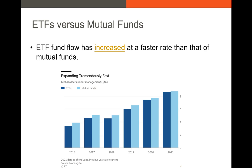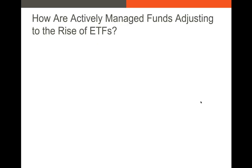Comparing fund flow or AUM of ETFs versus mutual funds year over year, ETFs are rapidly increasing their AUM and getting very close to surpassing mutual funds. Not all ETFs are passively managed and not all mutual funds are actively managed, but this is a good way to think about the active-versus-passive dynamic. The big takeaway is that passively managed funds like ETFs have become much more popular in recent years, with investors more willing to pile money into ETFs than they were 10 to 20 years ago.